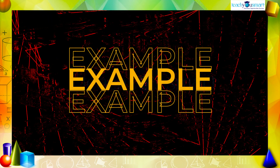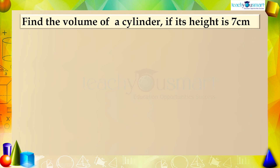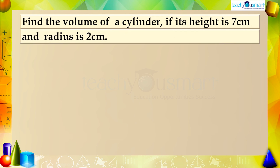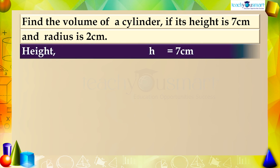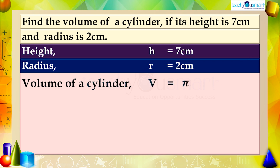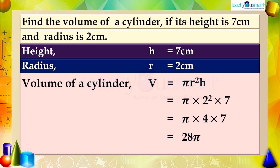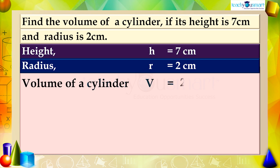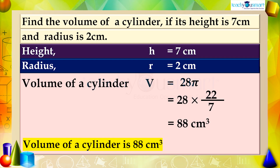Let's do an example. Find the volume of a cylinder if its height is 7 centimeters and its radius is 2 centimeters. Given: height h = 7 cm and radius r = 2 cm. The volume V = πr²h = π × 2² × 7 = π × 4 × 7 = 28π. Substituting the value of π as 22/7, we get 28 × 22/7 = 88 cubic centimeters. Therefore the volume of the cylinder is 88 cubic centimeters.